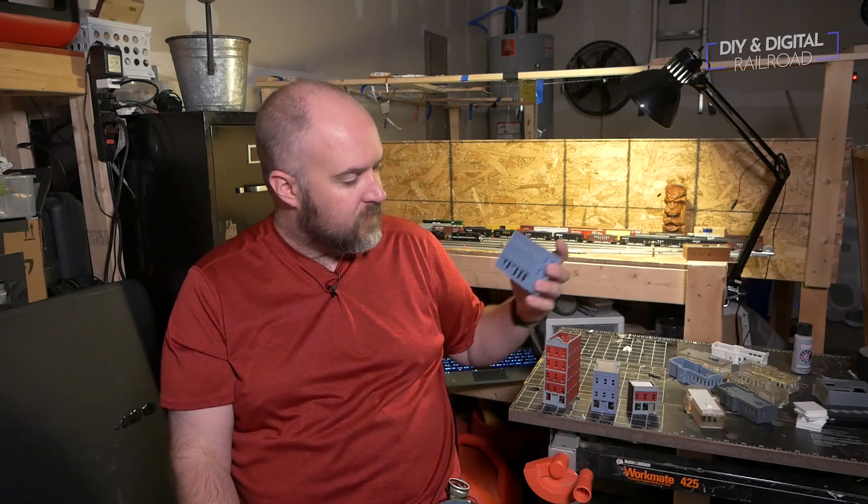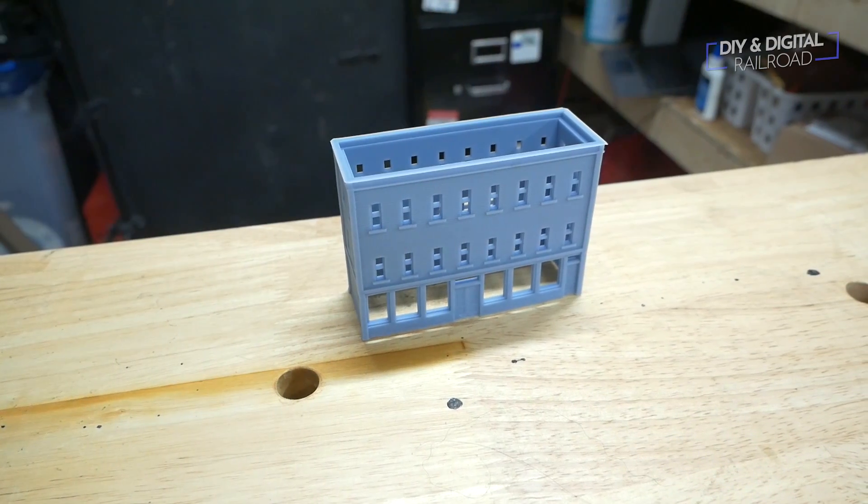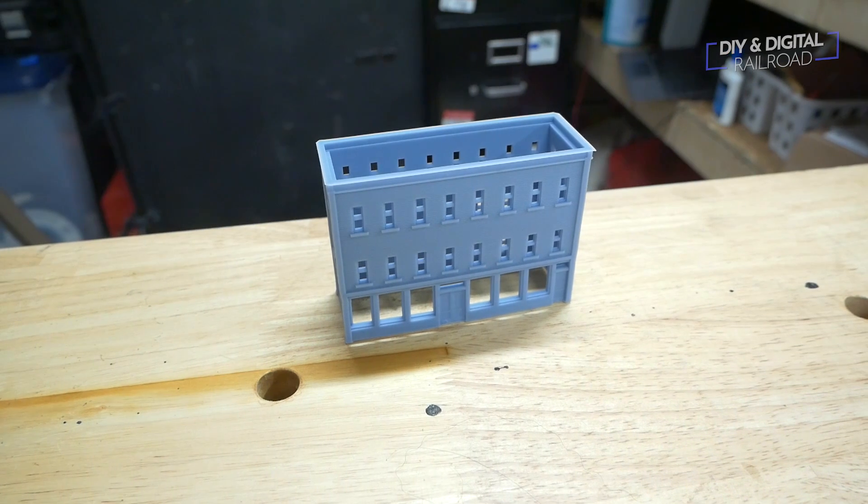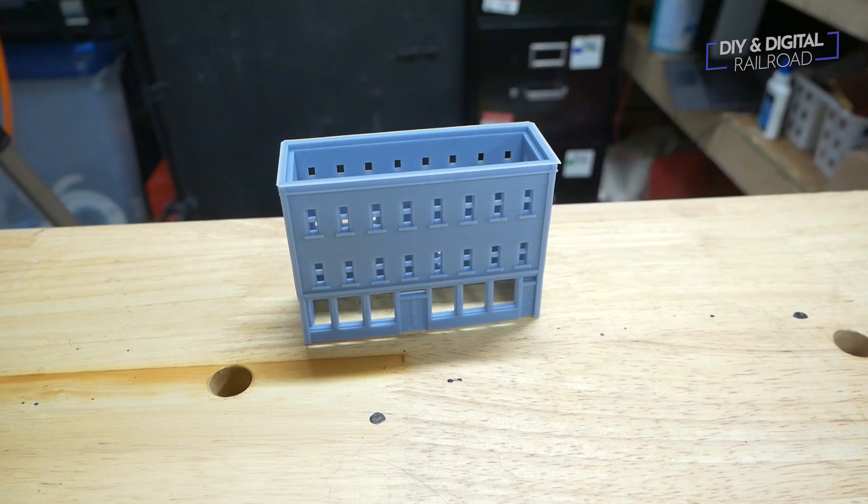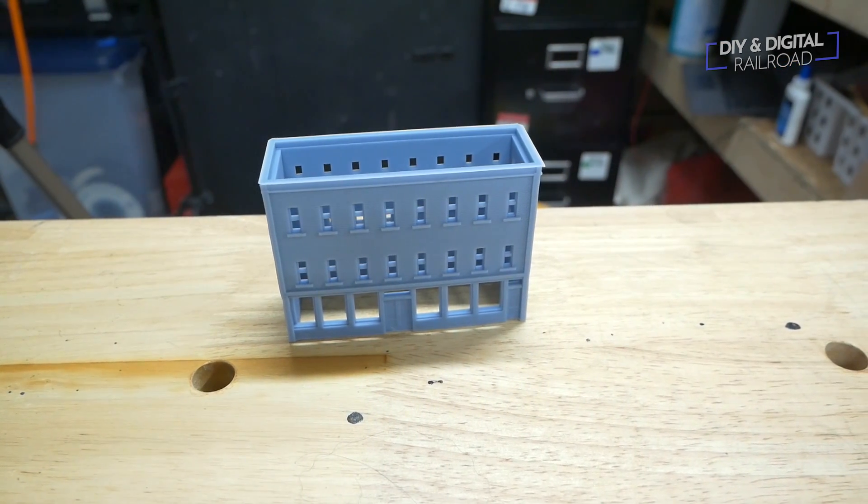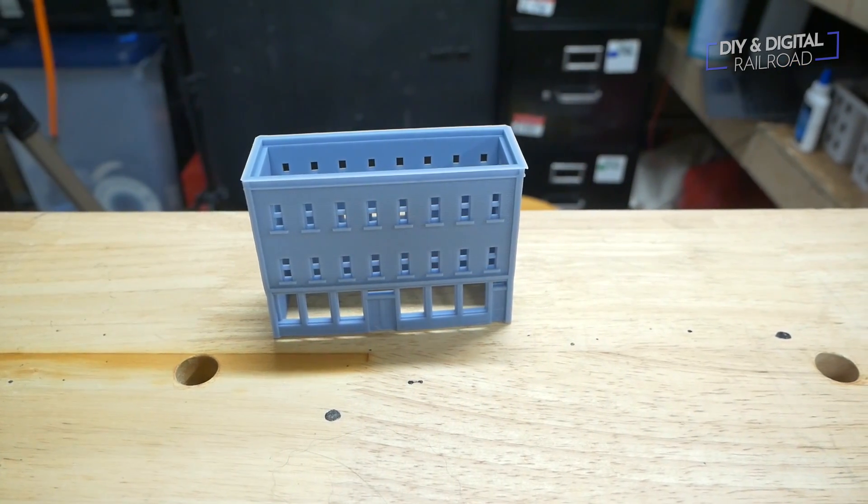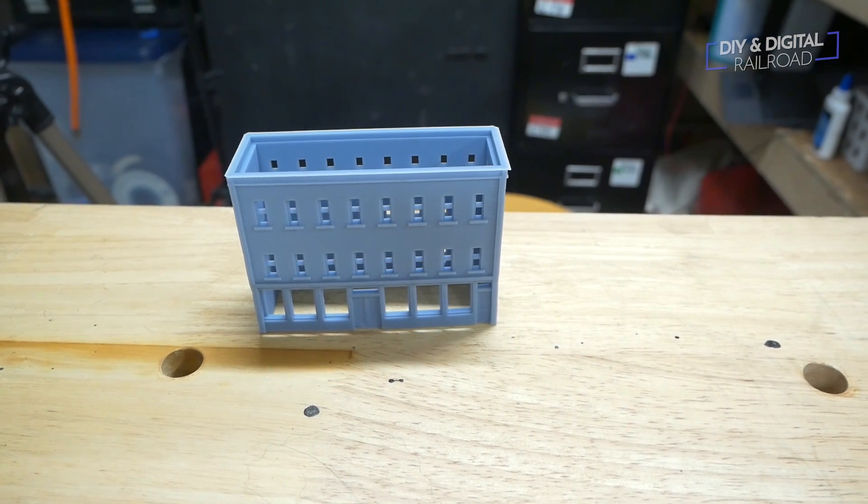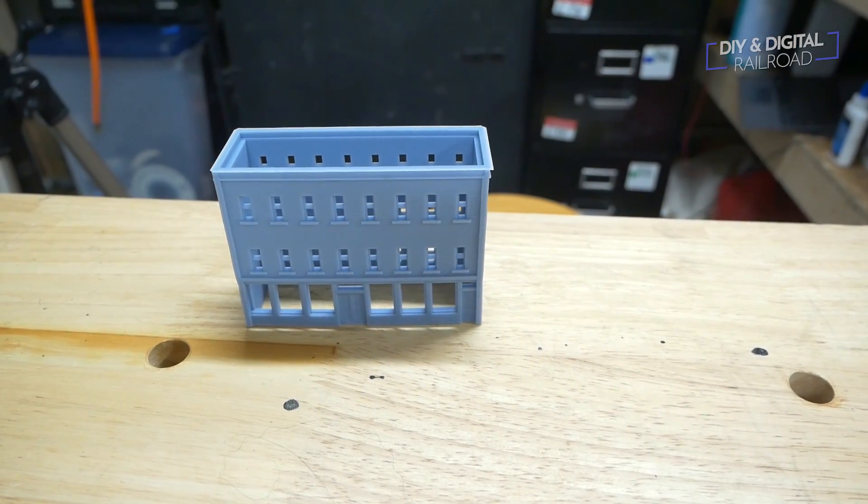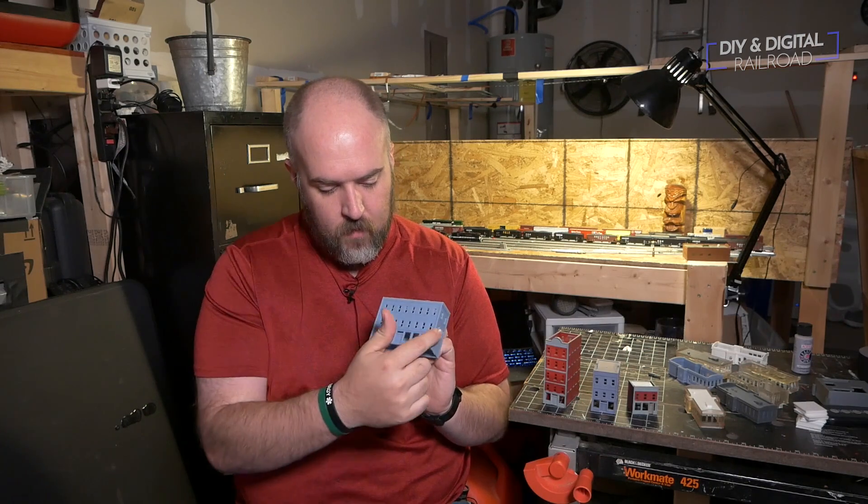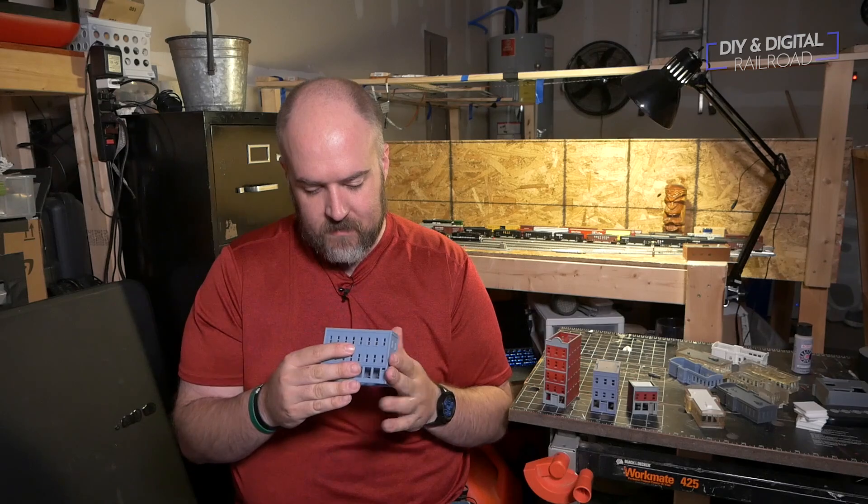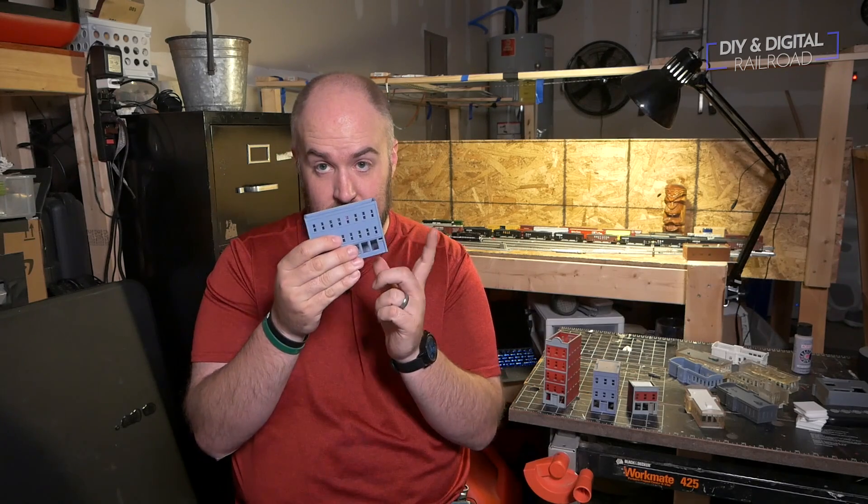And then building four is this long building. You can see it has all the windows for a storefront and then offices or apartments above it. It also has a wrap around lip and it's still got some issues with the print. I have to fix it up a little bit. It's got some issues with warping right on the edges and I have to shore it up a little bit, but this is building four.